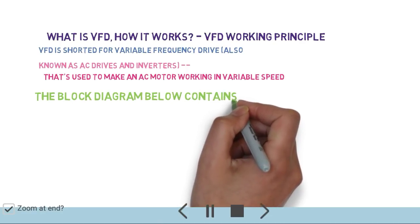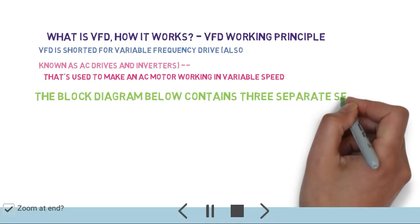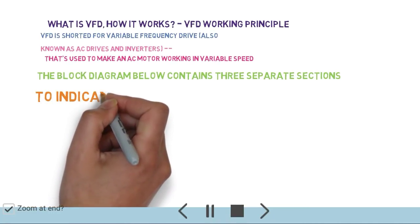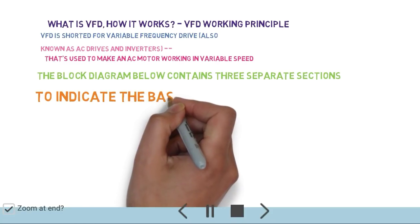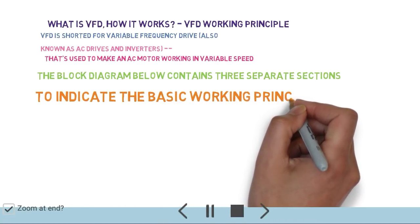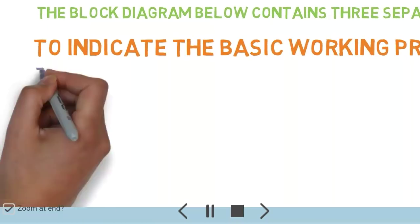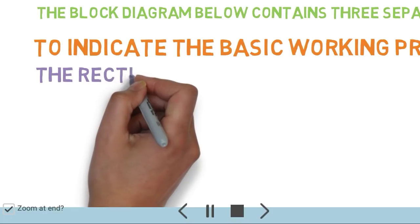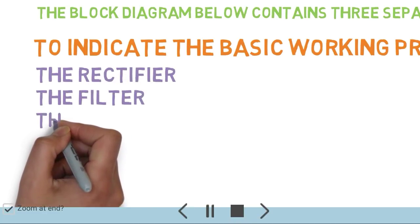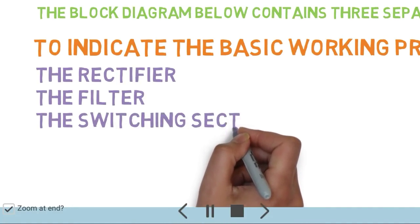The block diagram below contains three separate sections to indicate the basic working principle of VFD. First is the rectifier, second is the filter, and third is the switching section.